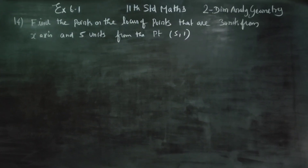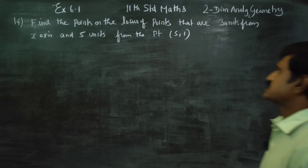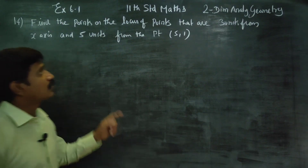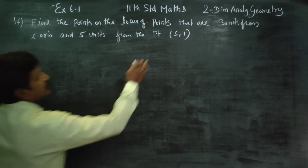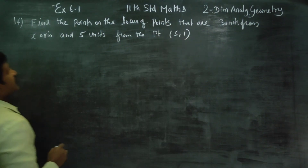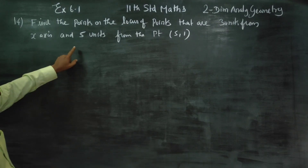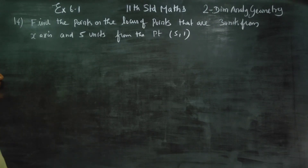Dear 11th standard students, in exercise number 6.1, sum number 14: find the points on the locus of the point that are 3 units from the x-axis and 5 units from the point (5, 1).